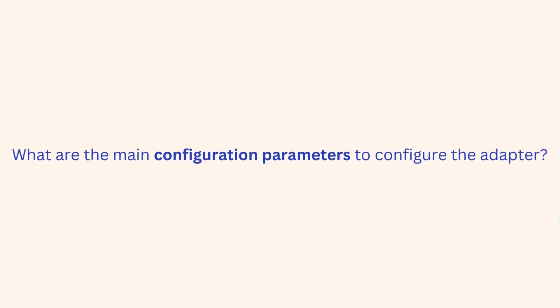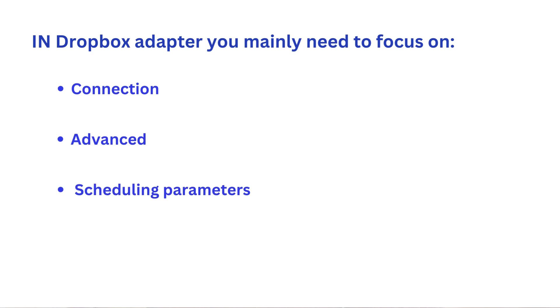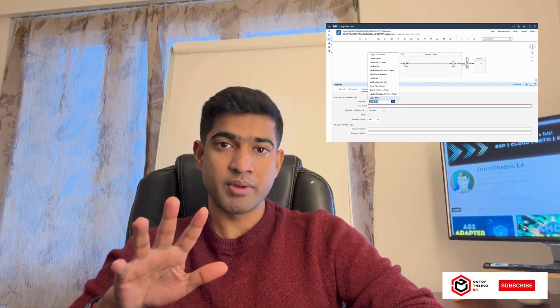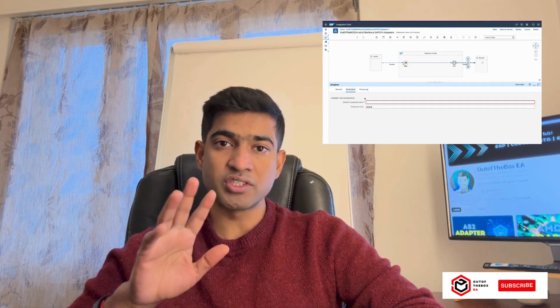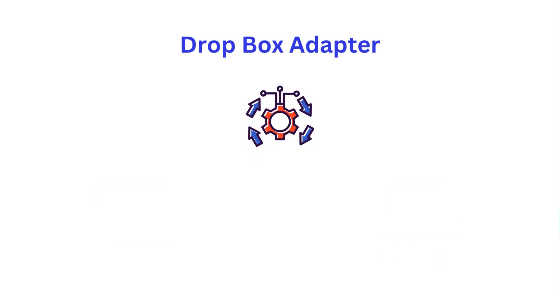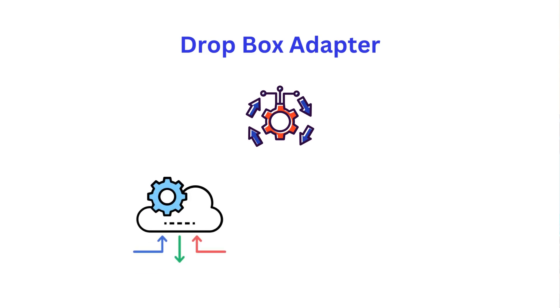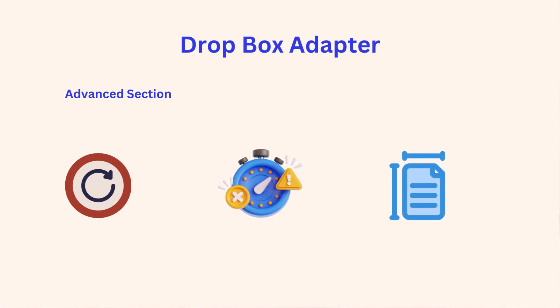Let's now talk about the configuration parameters you need to configure a Dropbox adapter. You mainly need to focus on connection, advanced, and scheduling parameters. I will cover the basic parameters here, but for detailed information, please refer to the SAP official documentation. In the connection section, you typically provide credential information in terms of OAuth authentication. In the processing area, you specify what kind of operation you need to perform on Dropbox Cloud, choosing the right operation based on sender or receiver type. In the advanced section, you indicate the retry mechanism, timeout, file size, and other non-functional details.